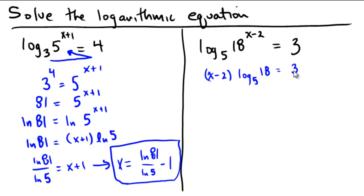Now, if you wanted to start towards isolating x, we would divide both sides by that logarithm, which would mean we would get x minus 2 equals 3 divided by log base 5 of 18.